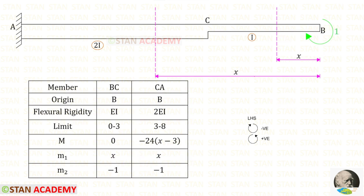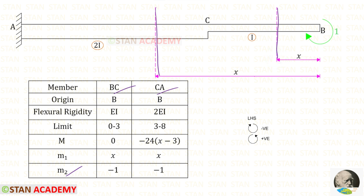Now we are going to find the moment m2. For that, in the direction of MB, we have to apply a unit moment. Let us assume that MB is acting in the clockwise direction, so we apply the unit moment in the clockwise direction. Let us find m2 in BC and CA. Up to both sections there is no load, only the unit moment, which is acting in the clockwise direction, so it will be negative.